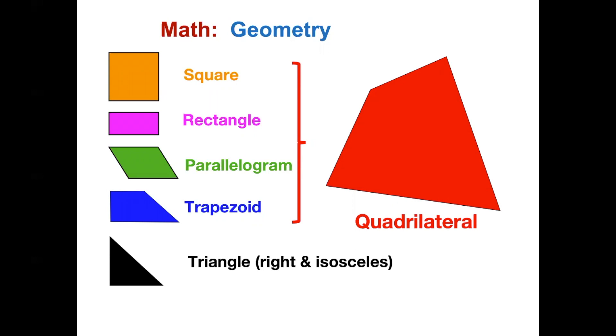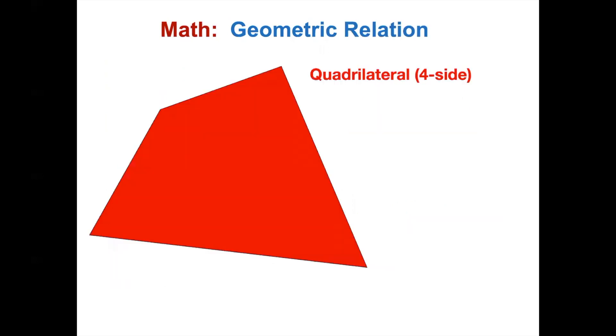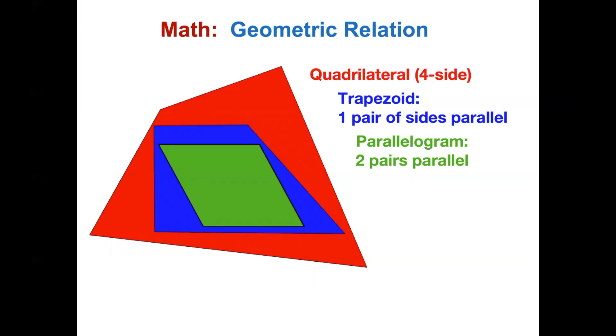Let's look at their relation. Quadrilateral has four sides and four corners, which can be different in length and angle. A trapezoid is a particular case of quadrilateral with one restriction. One pair of sides are parallel. A parallelogram is a particular case of a trapezoid with one more restriction. Both pair of sides are parallel.